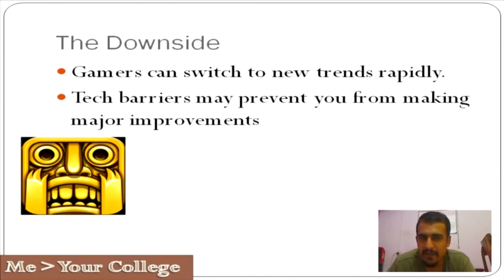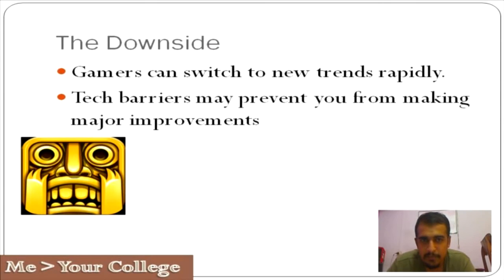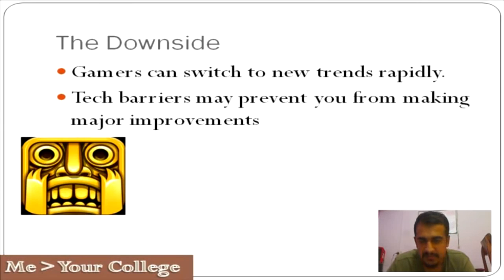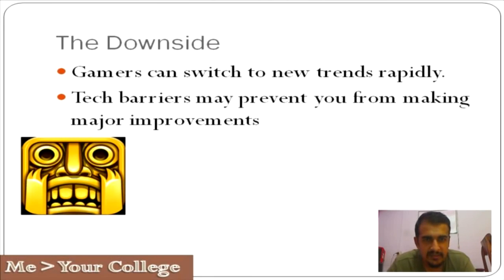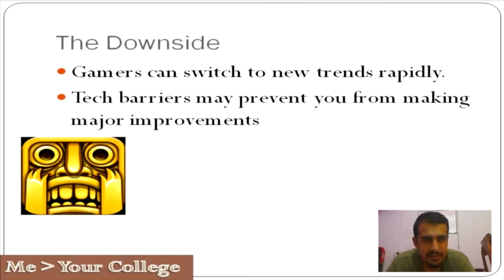Technology barriers may also prevent you from making major improvements. Asphalt 8 is close to 1.5 GB to download, and a lot of people are unable to download it because their internal memory doesn't support it. Newer games from companies like Gameloft will have better quality graphics and sound, which means they'll take up more space, requiring people to upgrade hardware or buy new phones. That makes it a challenge to implement major improvements — all they can do is tweak a few minor things. And for certain games like Temple Run, there's absolutely nothing you can change — no maps, no characters, because everything is pretty much the same.